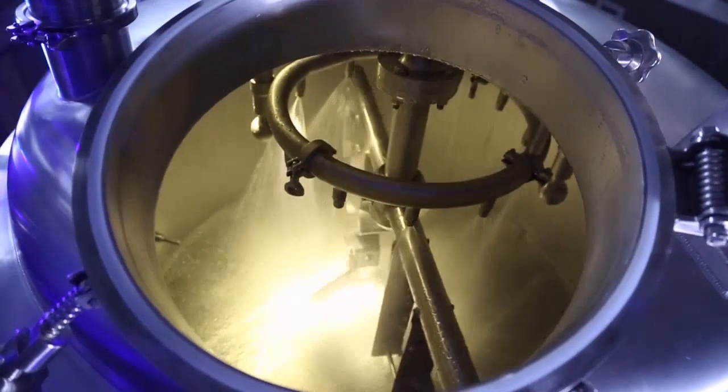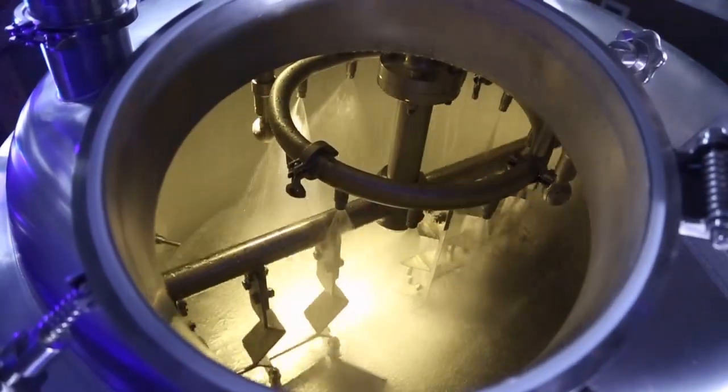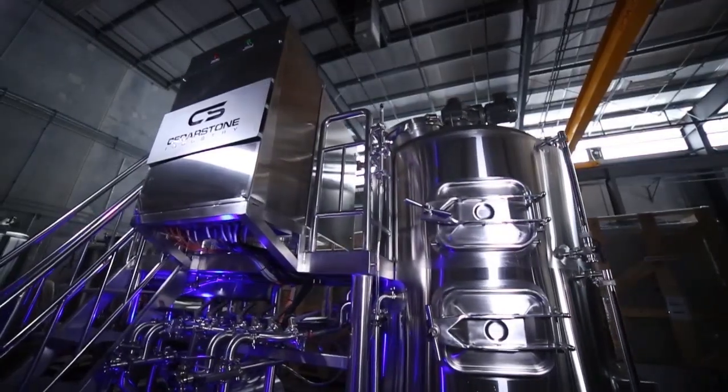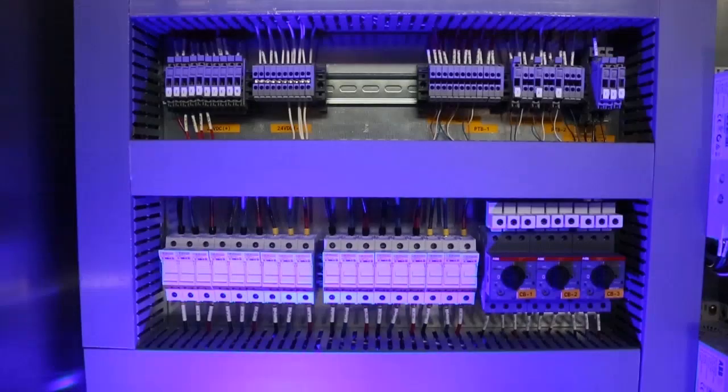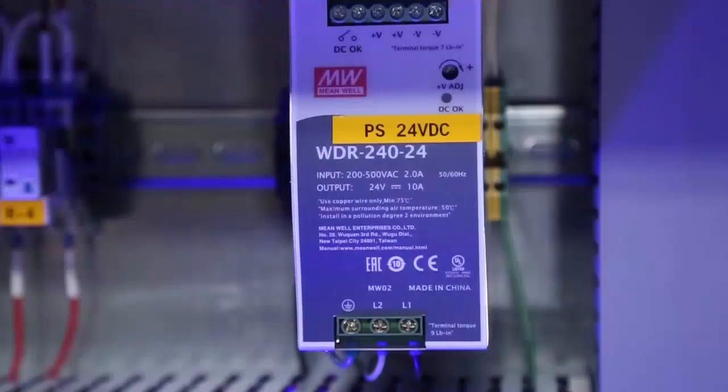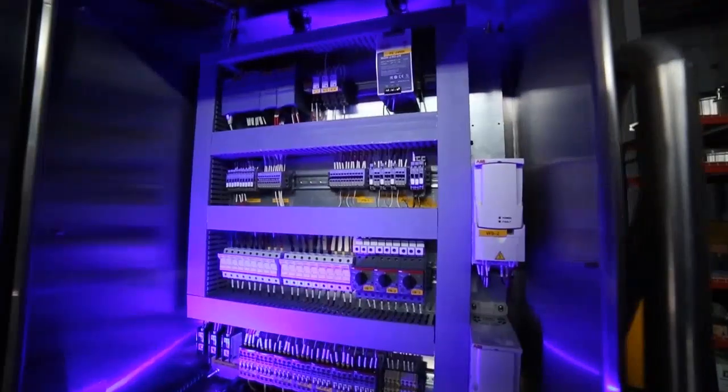100% stainless waterproof NEMA 4X enclosure with 9-inch touchscreen, frequency-controlled stainless 304 raking assembly with cutting knives. Underscreen's CIP system allows the bottom of the lauter screens and vessel dish bottom to be cleaned thoroughly.